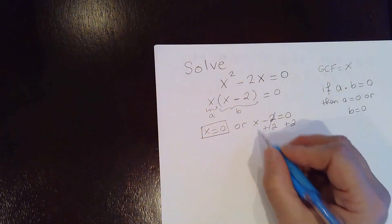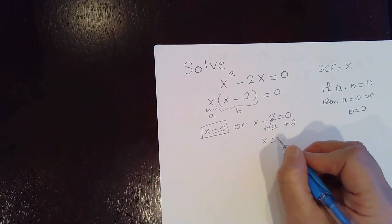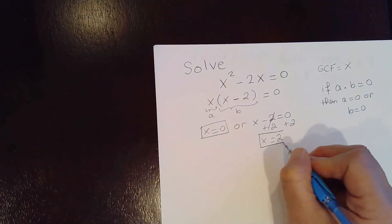This cancels, and you get x equal to 0 plus 2, that's 2. The solutions are 0 and 2.